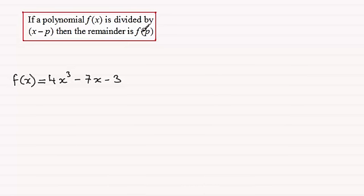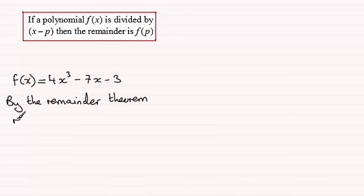So if we're to find out the remainder when this is divided by x minus 2 then p would have to be 2. So by the remainder theorem, what we've got is that the remainder will be equal to f(2).